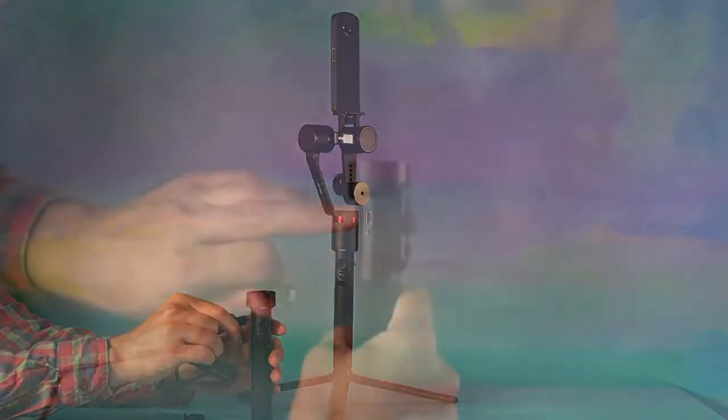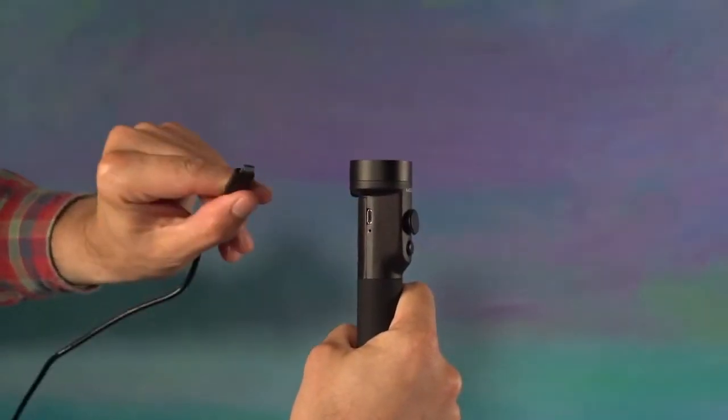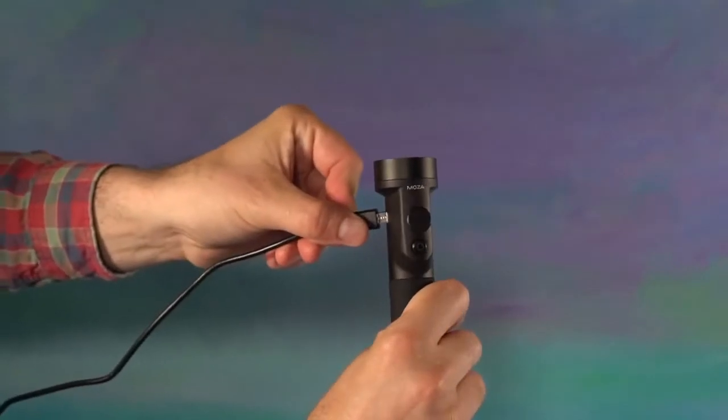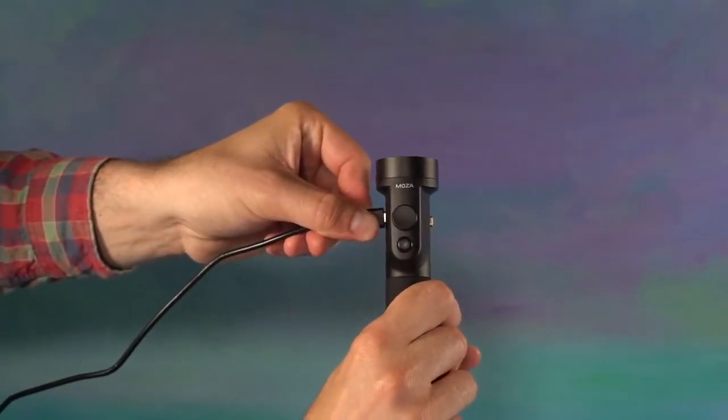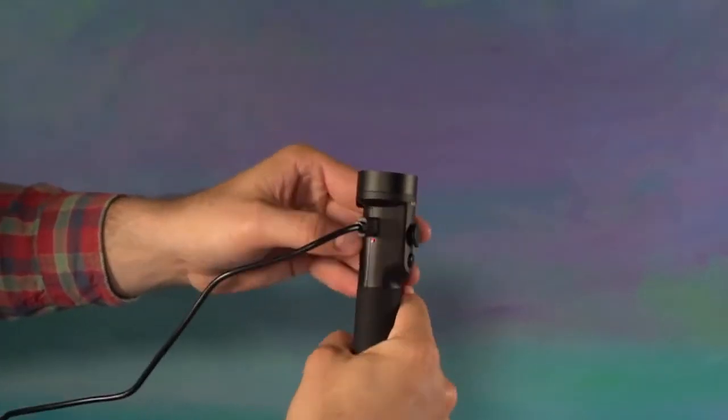The battery can be charged from the USB port located on the Guru 360's handle. Connect the other end of the USB cable to a USB power supply. A red LED light indicates charging.